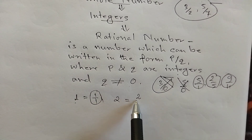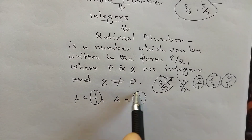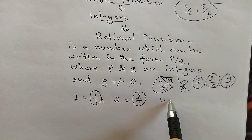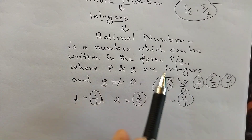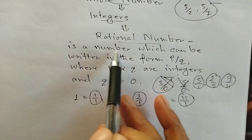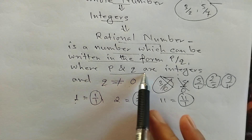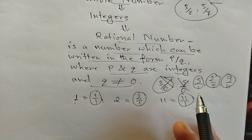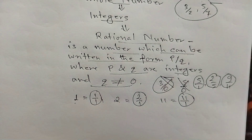This is the definition of the rational number: a number which can be written in the form of P by Q, where P and Q are integers and Q is not equal to 0.